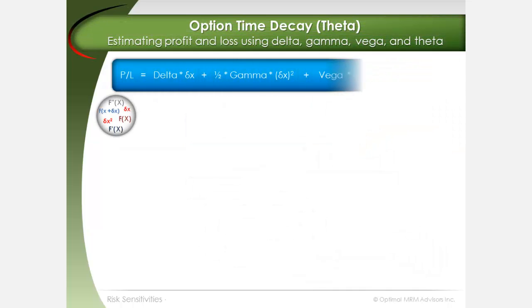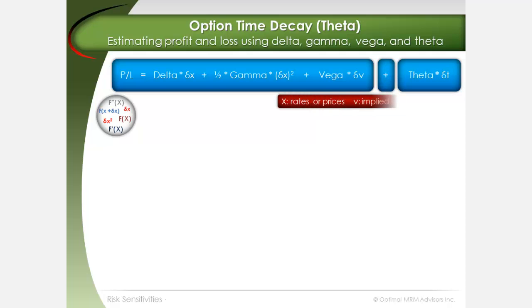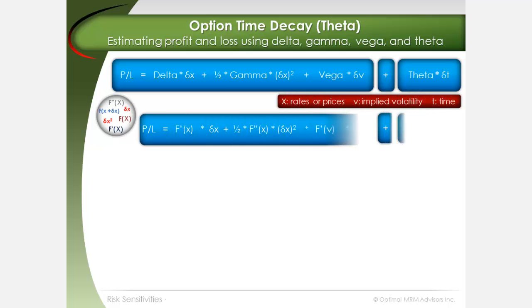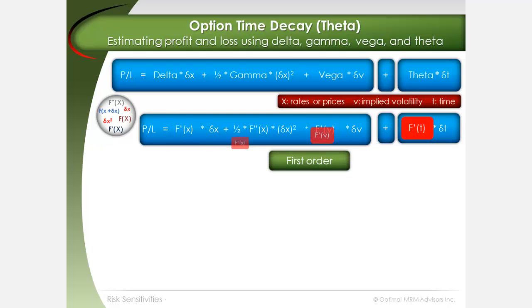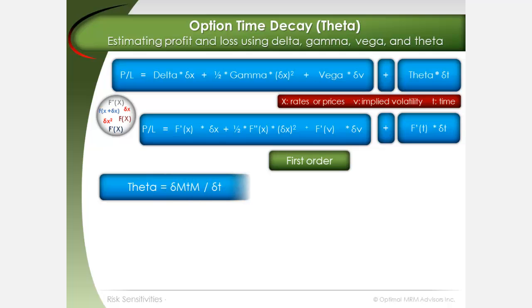In order to extend the P&L equation based on sensitivities, we can add a theta sensitivity expression for the change in the option's price based on the passage of time. Theta is equal to the change in the mark to market relative to delta T, where T equals 1 day.